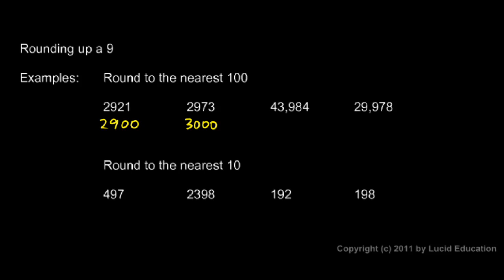2973 is closer to 3,000 or 30 hundreds than it is to 2,900. So we round it up to the 30 hundreds or 3,000.